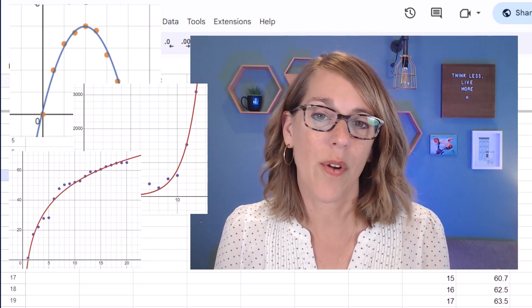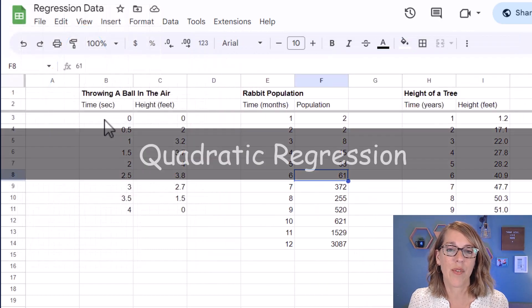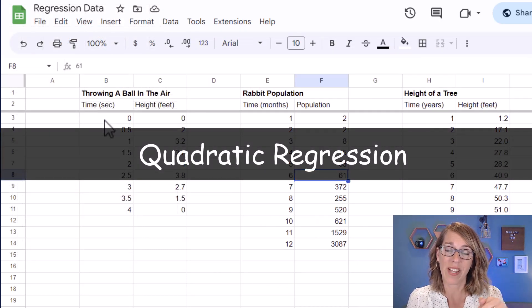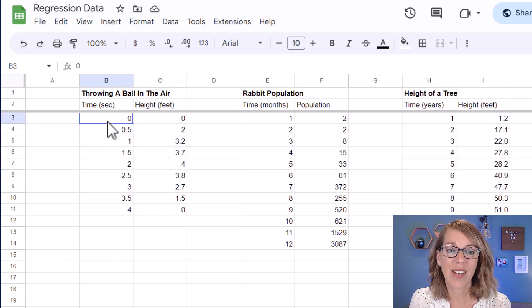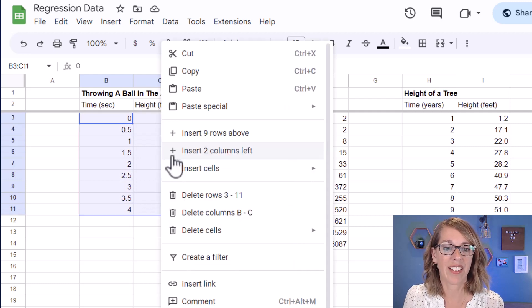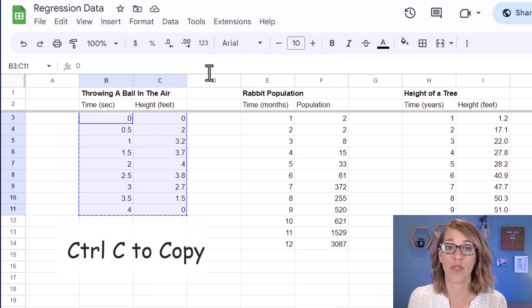I'm going to start with the throwing the ball in the air data. If you want to follow along, the link to my data is down below. I'm going to copy my data by clicking, holding, and dragging through the data, and then I'm going to right click and copy, or you can do a Ctrl+C.